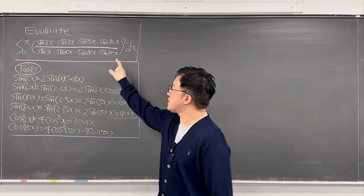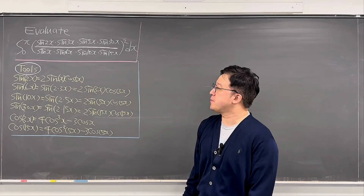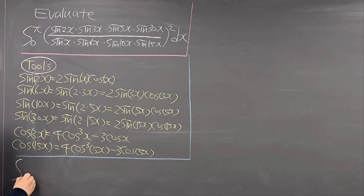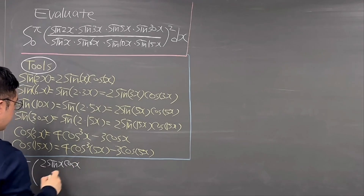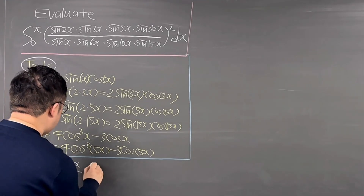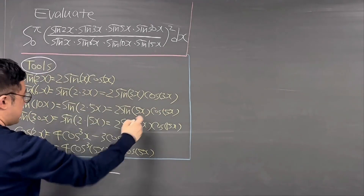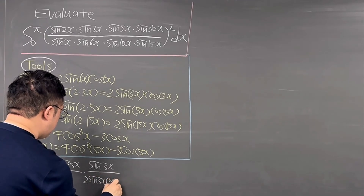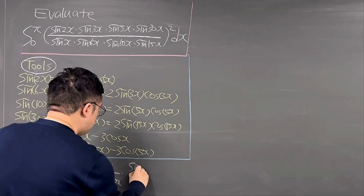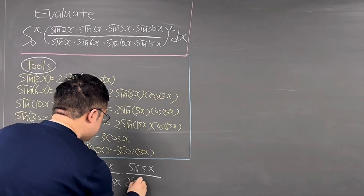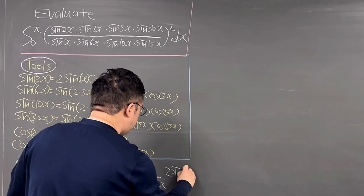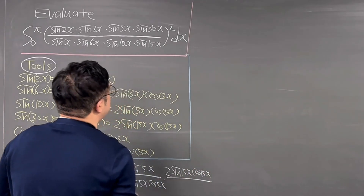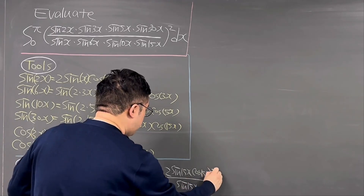I've listed some important tools we'll be using, and the expression inside the parentheses can be simplified. Applying the double-angle identity sine(2θ) = 2sin(θ)cos(θ): sine(2x) over sine(x) gives 2cos(x); sine(6x) over sine(3x) gives 2cos(3x); sine(10x) over sine(5x) gives 2cos(5x); and sine(30x) over sine(15x) gives 2cos(15x). The factors of 2 cancel pairwise.